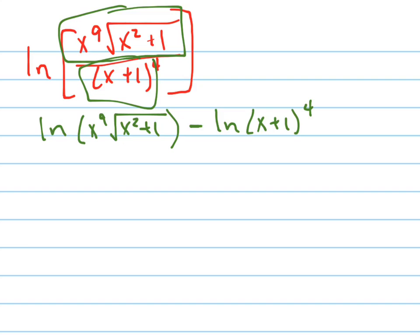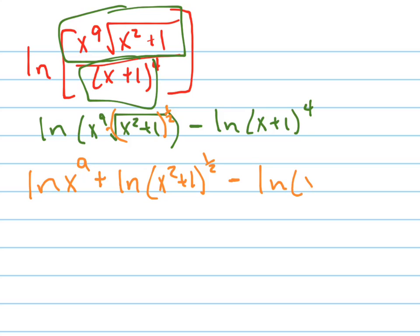Now I'm going to simplify. This means to the one-half power. But first, this is a product, so I'm going to break that up: natural log of x to the 9th plus the natural log of — I'm going to rewrite this with fractional exponents — minus the natural log of x plus 1 to the 4th.